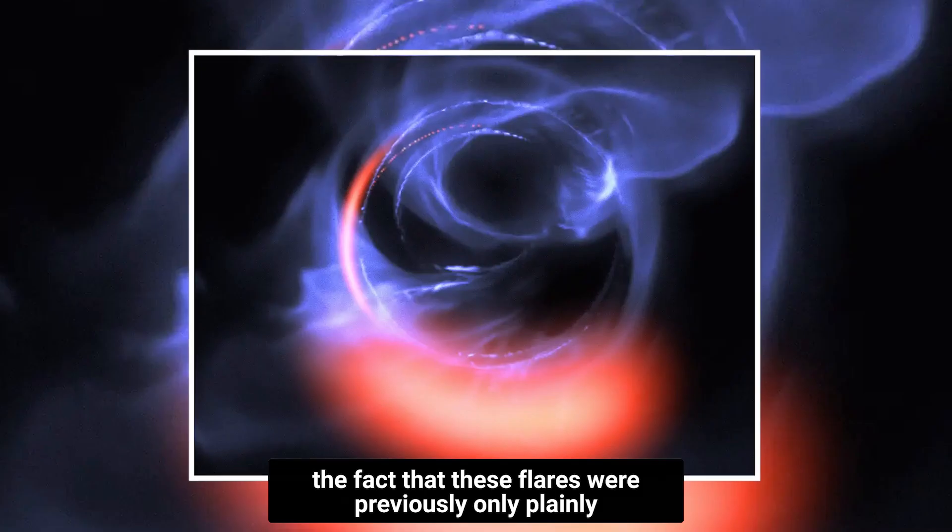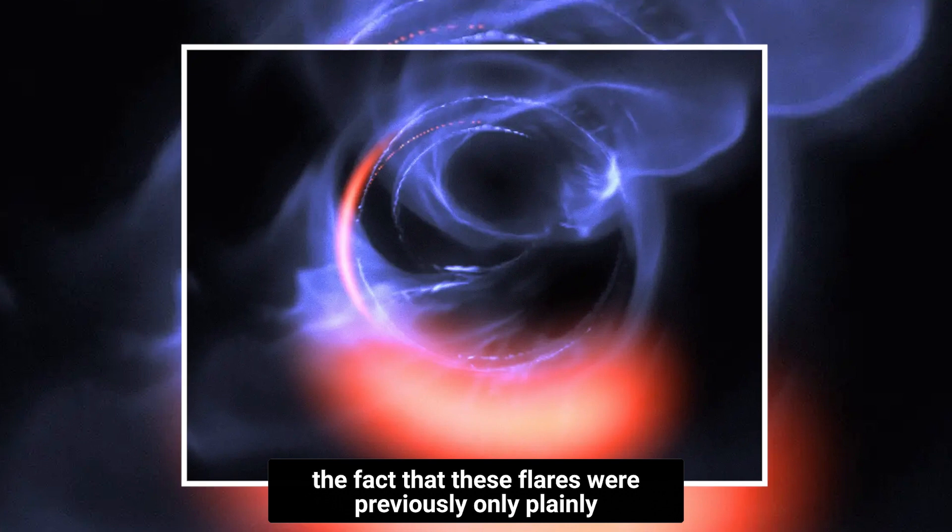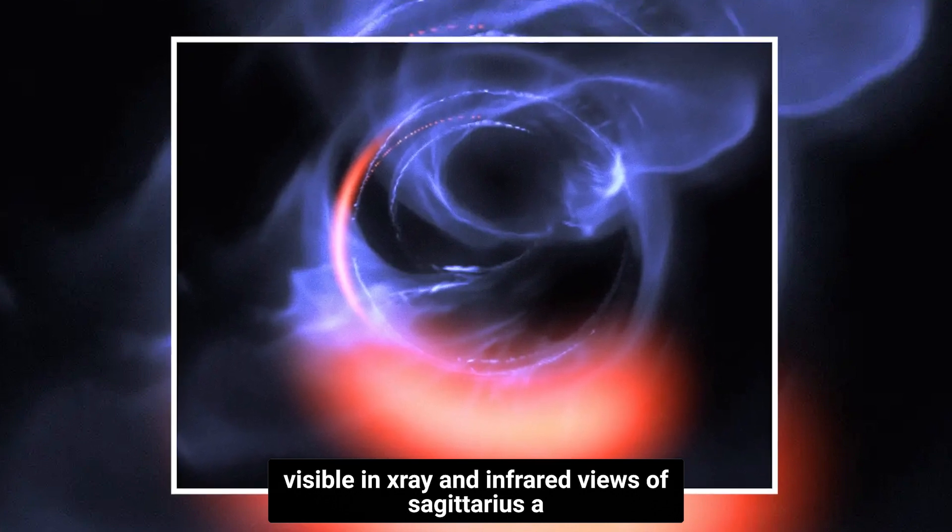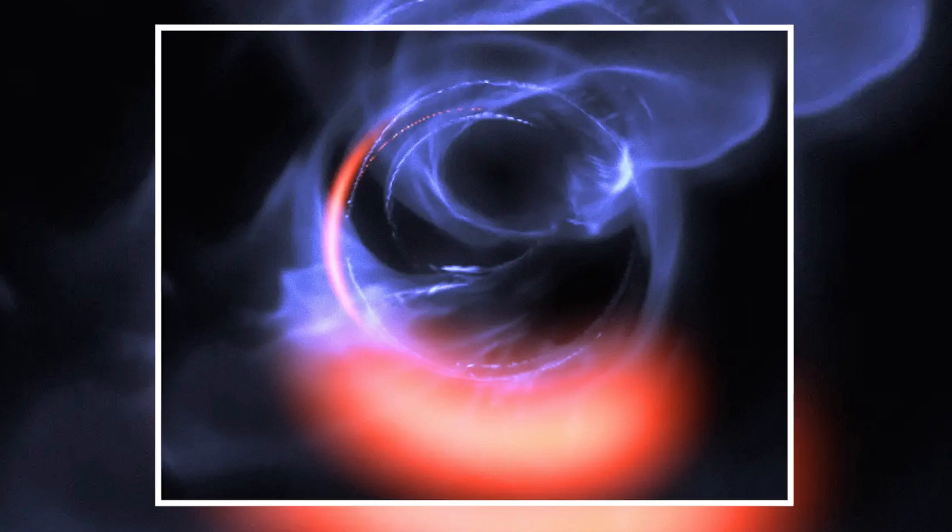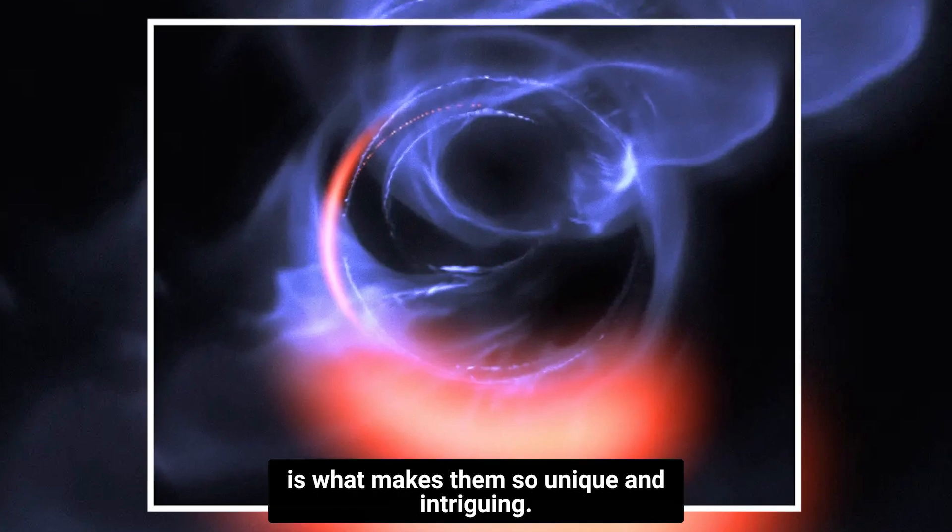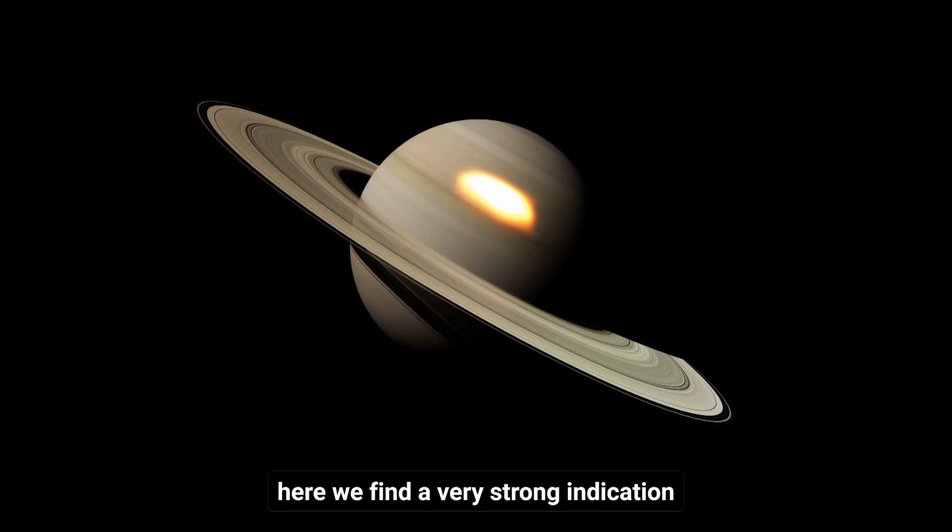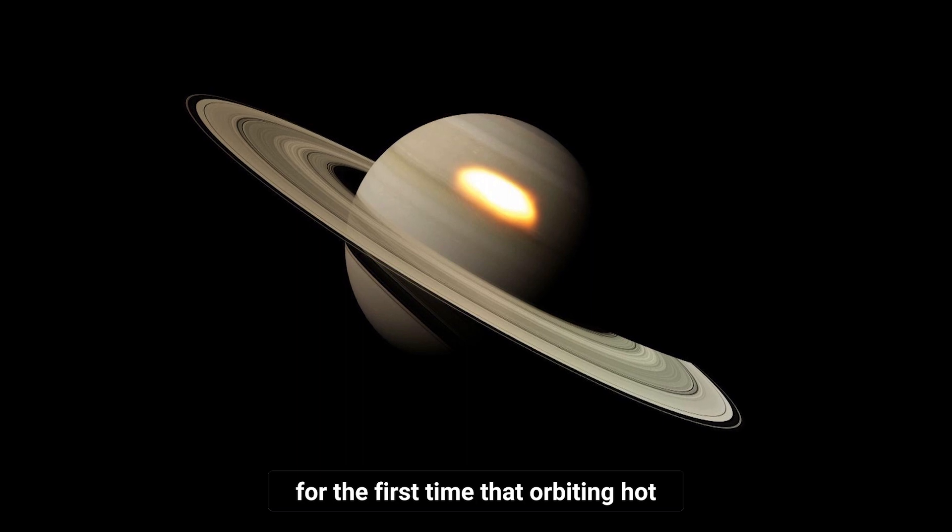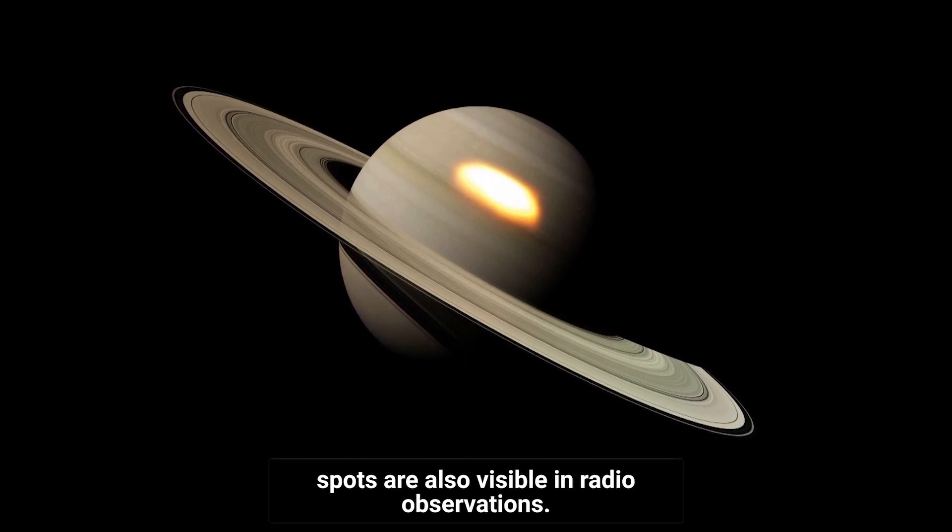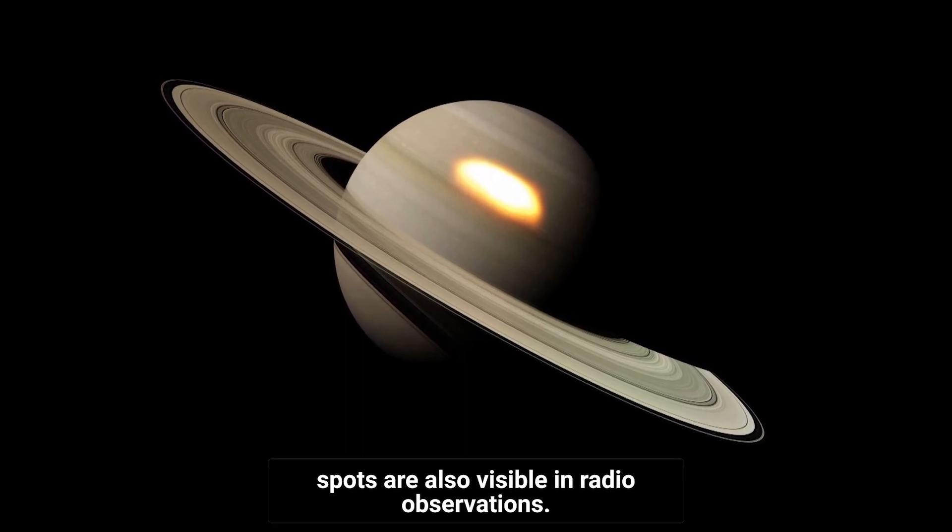The fact that these flares were previously only plainly visible in X-ray and infrared views of Sagittarius A is what makes them so unique and intriguing. Here we find a very strong indication for the first time that orbiting hot spots are also visible in radio observations.